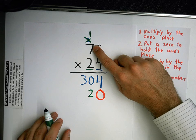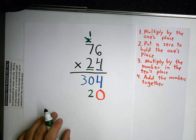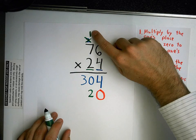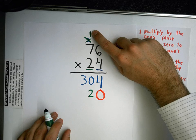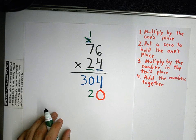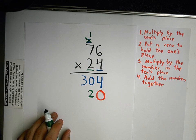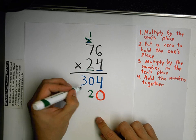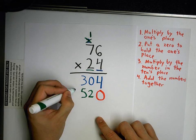7 times 2. What is that? 14. But I have a 1 up here. So what do I need to do with that? Bailey. And what's it going to be? 15. So I have my 5 and my 1.